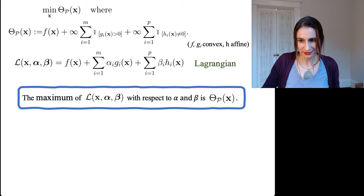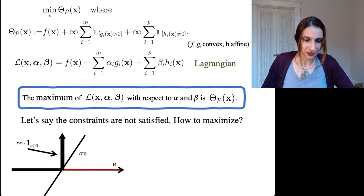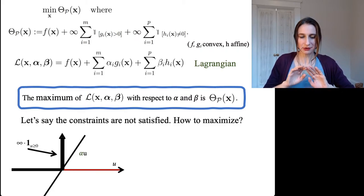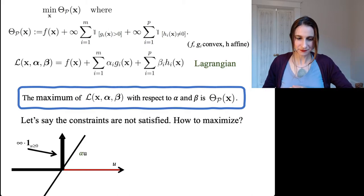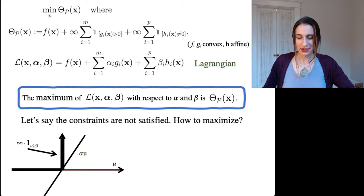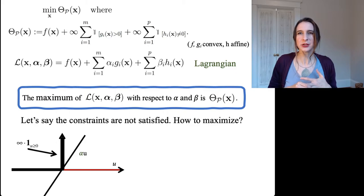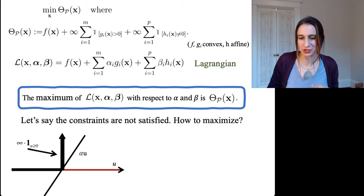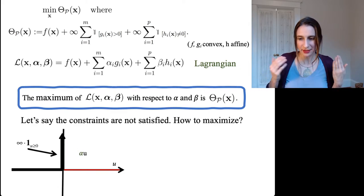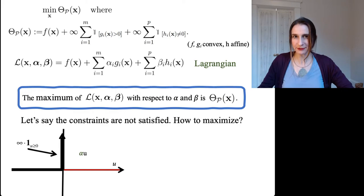What if the constraints are not satisfied? If the constraints are not satisfied, we're on the right side of the function where gi of x is positive. The primal is infinite there, whereas the Lagrangian is equal to alpha times gi of x. To make that as large as possible, you just make alpha go to infinity — and then you get infinity. So you make alpha infinite if the g constraints are violated.